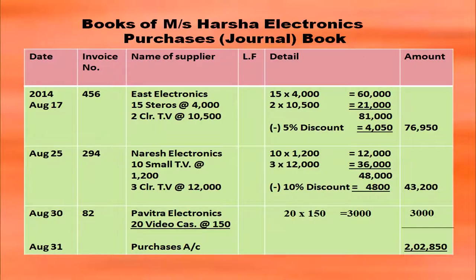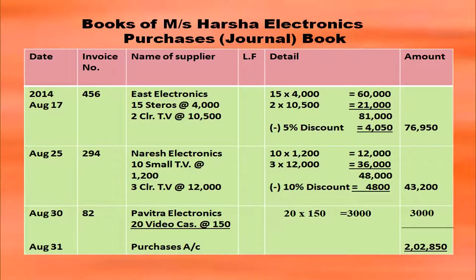On August 25th, Naresh Electronics: 10 small TVs at rupees 1,200, so 10 × 1,200 = 12,000. Harsha Electronics also bought 3 color TVs at rupees 12,000 from Naresh Electronics, so 3 × 12,000 = 36,000. Thus 12,000 plus 36,000 gives 48,000. Less trade discount 10 percent: 48,000 × 10/100 = 4,800. So 48,000 minus 4,800 gives 43,200.